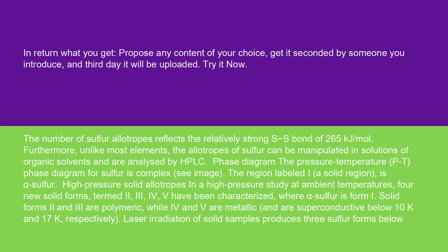The number of sulfur allotropes reflects the relatively strong S-S bond of 265 kJ per mole. Furthermore, unlike most elements, the allotropes of sulfur can be manipulated in solutions of organic solvents and are analyzed by HPLC.